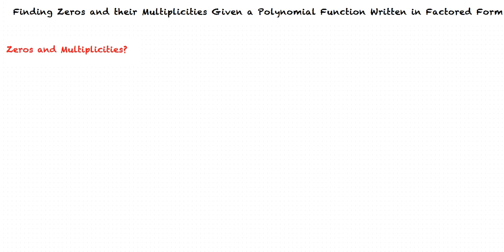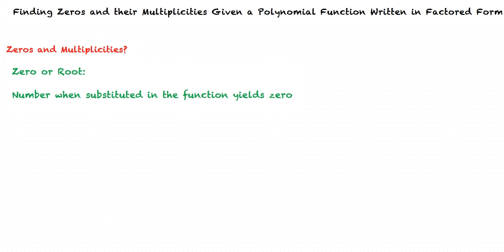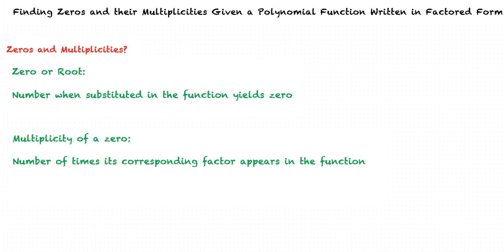This video will cover the topic of finding zeros and their multiplicities given a polynomial function written in factored form. A zero, also referred to as a root, is a number which when substituted in the function yields zero. Multiplicity of a zero is the number of times its corresponding factor appears in the function.